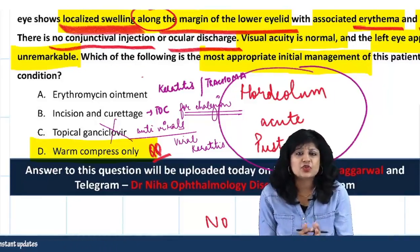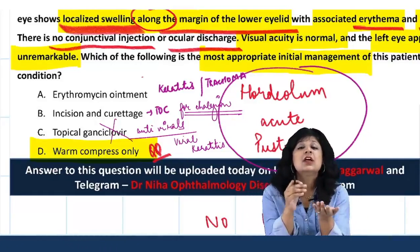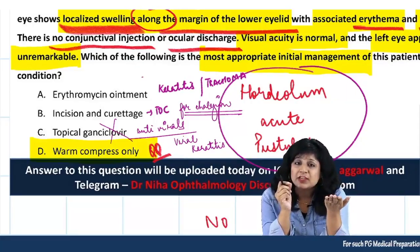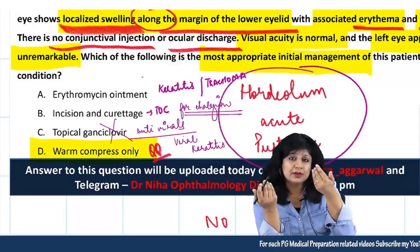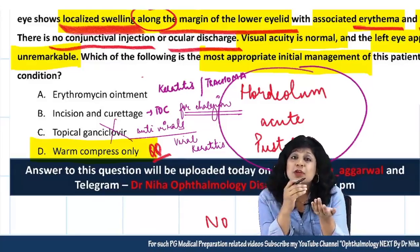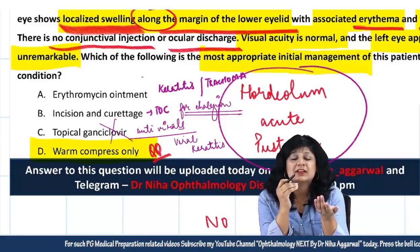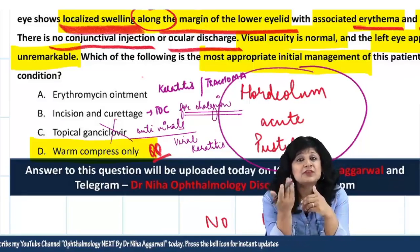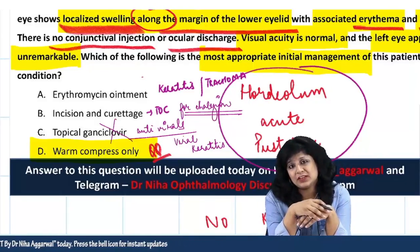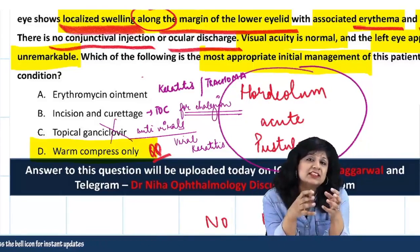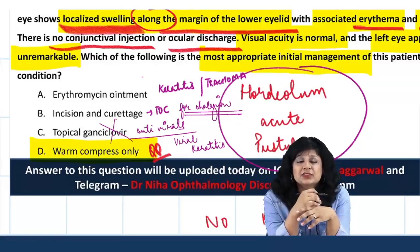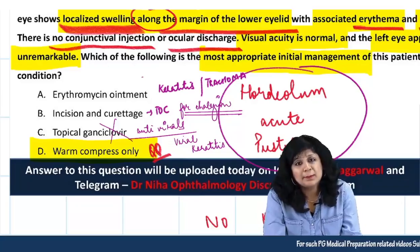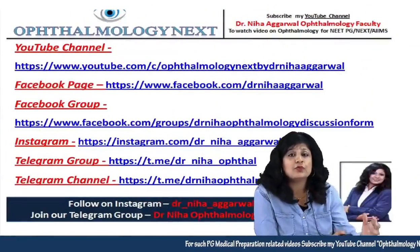Option D is warm compressors — yes, this is the correct initial treatment. What happens is that there is usually a small pustule pointing outward on the outer side of the lid margin if it is an external hordeolum, or slightly away from the lid margin if internal. When you apply warm compressors and do hot fermentation properly, this pustule is released and the pus is drained, which helps settle the inflammation quickly and allows medications to act more efficiently. That is why the initial treatment is warm compressors, not erythromycin ointment.